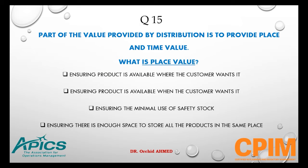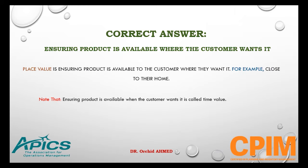Question number 15. Part of the value provided by distribution is place and time value. What is the place value? The right answer is ensuring product is available where the customer wants it — for example, close to their home. Note that ensuring product is available when the customer wants it is called time value, not place value.